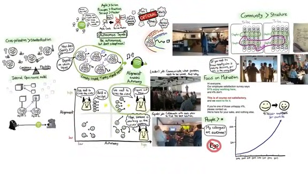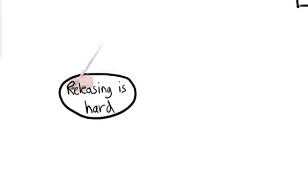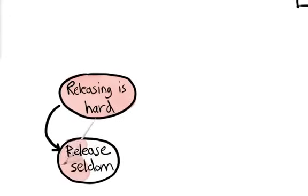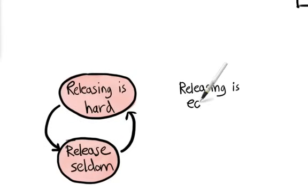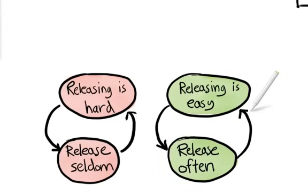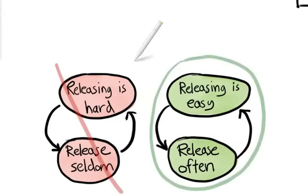One thing that matters a lot for autonomy is how easily can we get our stuff into production. If releasing is hard, we'll be tempted to release seldom to avoid the pain. That means each release is bigger and therefore even harder. It's a vicious cycle. But if releasing is easy, we can release often. That means each release is smaller and therefore easier.